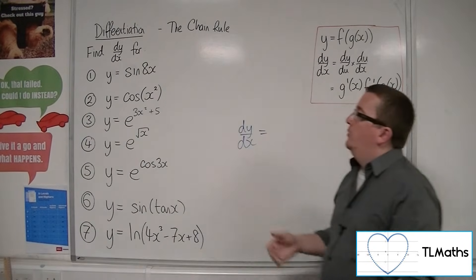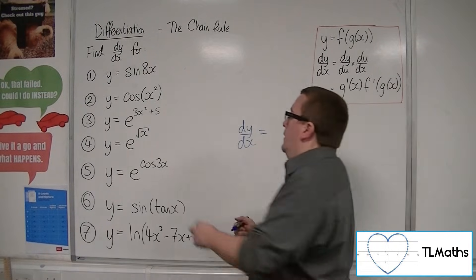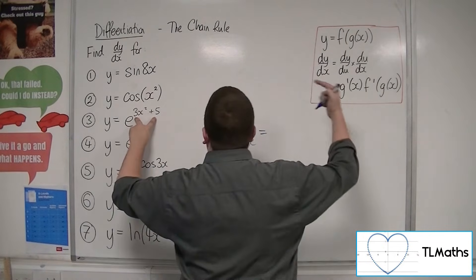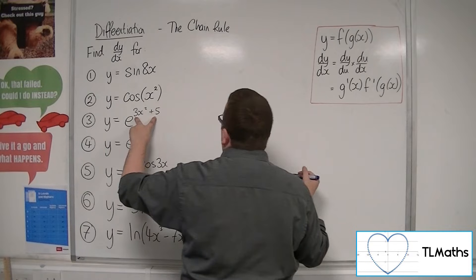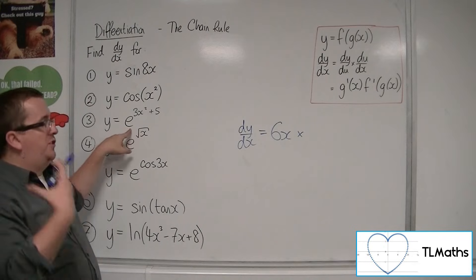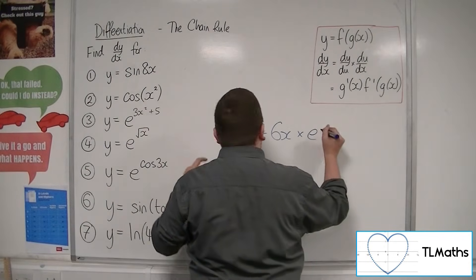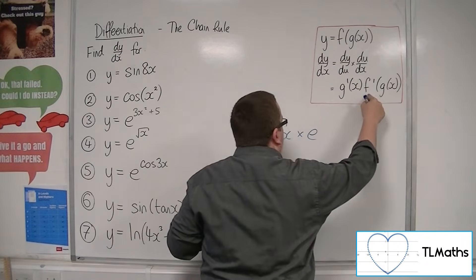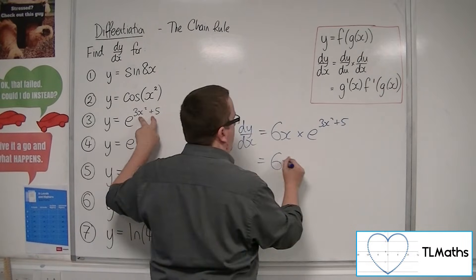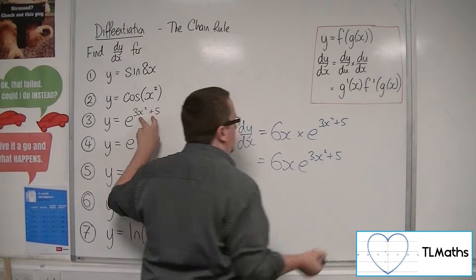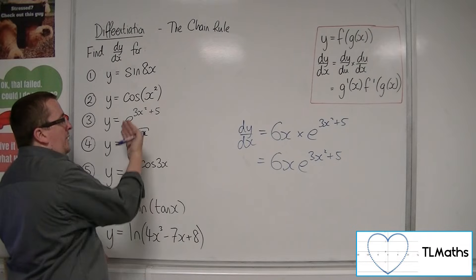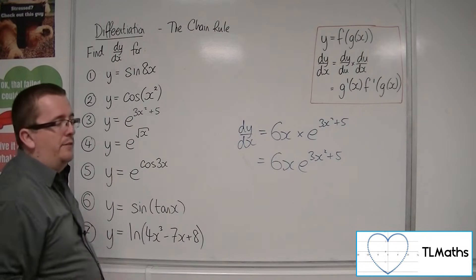Number three: y equals e to the 3x squared plus 5. The 3x squared plus 5 is the u — the g of x. The derivative of what's inside comes outside, so 3x squared plus 5 differentiates to 6x. The derivative of e to the x is just e to the x, so it differentiates to itself. What goes inside is the g of x, the 3x squared plus 5. So when differentiating e to the power of a function of x, the derivative of that function comes to the front and multiplies e to the 3x squared plus 5.